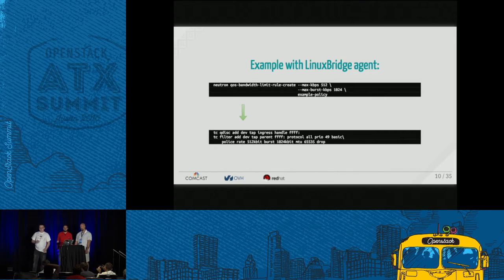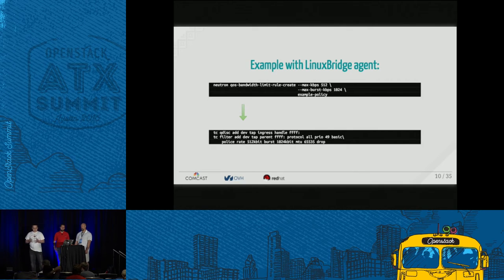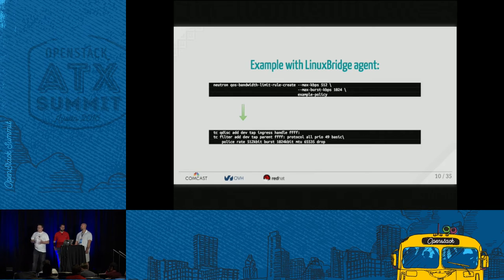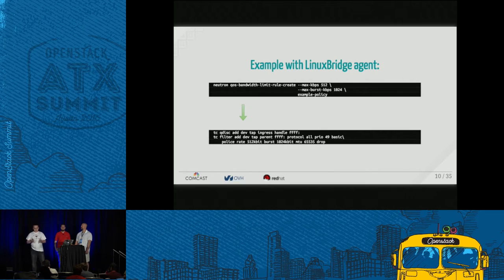Here is an example of how Linux Bridge Agent applies a bandwidth limit rule on a host. For a rule configured in Neutron with a command like shown on this slide, Linux Bridge Agent will execute two TC commands. The first command enables ingress Qdisk and the second configures a filter to match all protocols and police it with the rate and burst given in the Neutron API. The third parameter is the MTU — the max size of packets that can be handled by this filter; bigger packets will be automatically dropped.